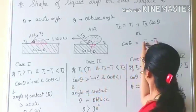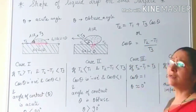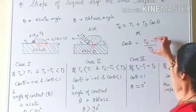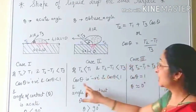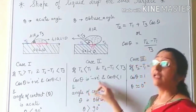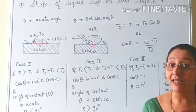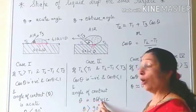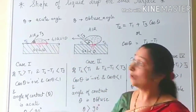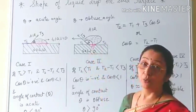Case 2: T2 is less than T1. Here T2 minus T1 is negative, so the numerator is negative. Since the denominator T3 is positive, cos θ is negative. A negative cosine means the angle θ is greater than 90 degrees — that is, the angle of contact is obtuse. The drop in this case forms with an obtuse angle of contact.